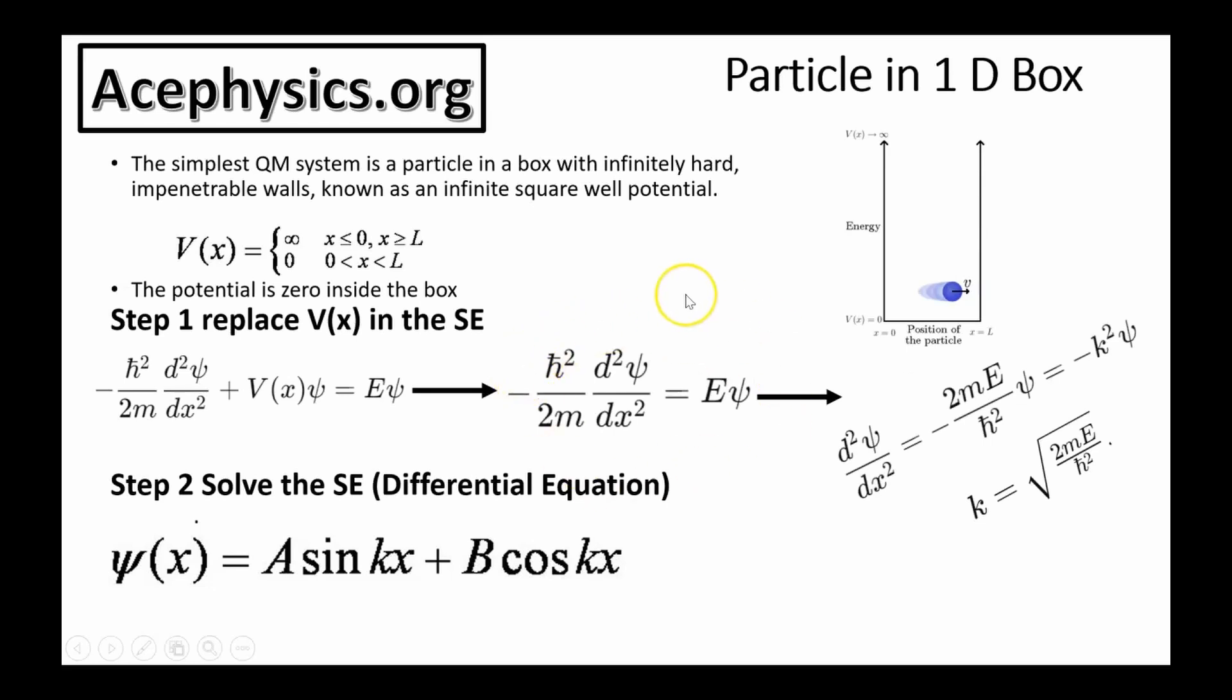Now we have a differential equation, and you can solve this differential equation by dividing both sides by h-bar squared over 2m. That leads to this equation here, and this is simple to solve. We can simplify it a little bit by writing k as the square root of 2me over h-bar squared, and the solution to this is psi of x is equal to some constant a times sine of kx plus some constant b times cosine of kx, where this is k.